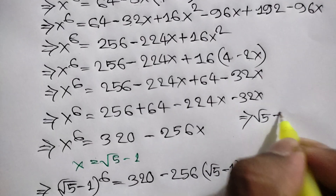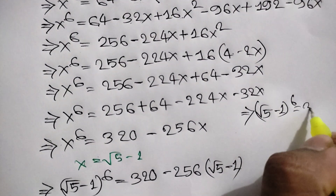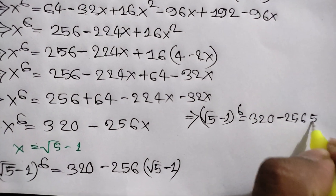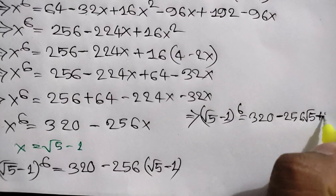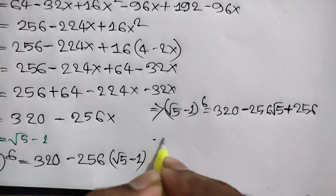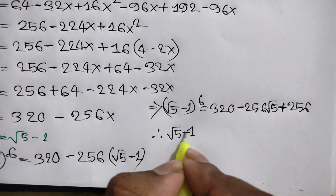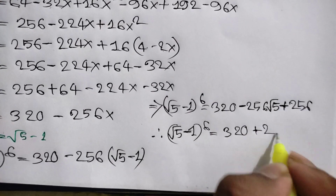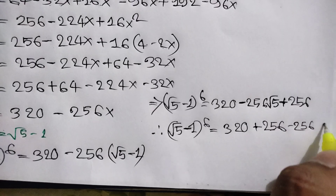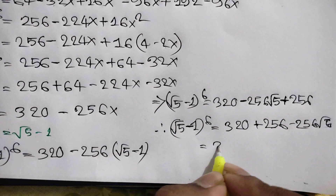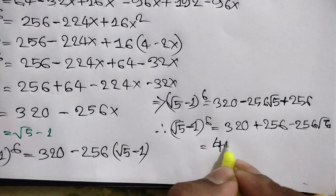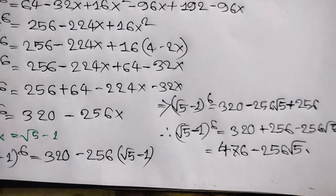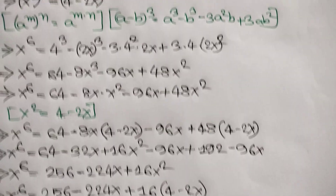So square root of 5 minus 1 to the power 6 equals 320 minus 256 times square root of 5 plus 256. Finally, square root of 5 minus 1 to the power 6 equals 576 minus 256 square root of 5. That is our final answer. Thanks for watching. If you like this video please subscribe to my channel, and see you in the next video. Bye bye.